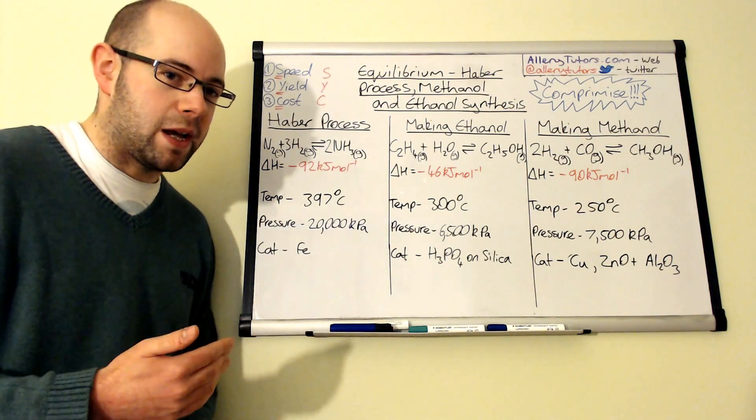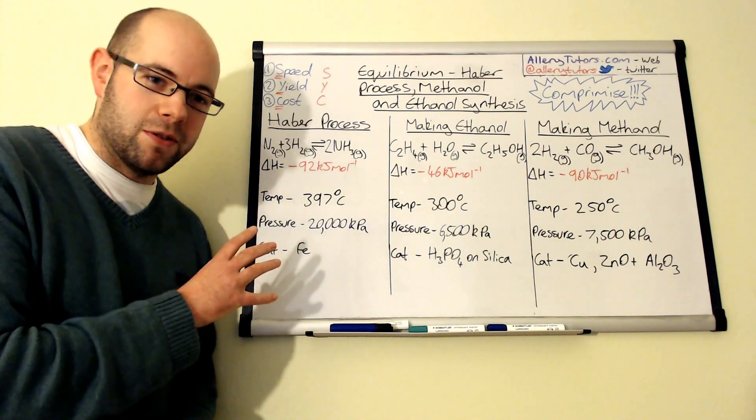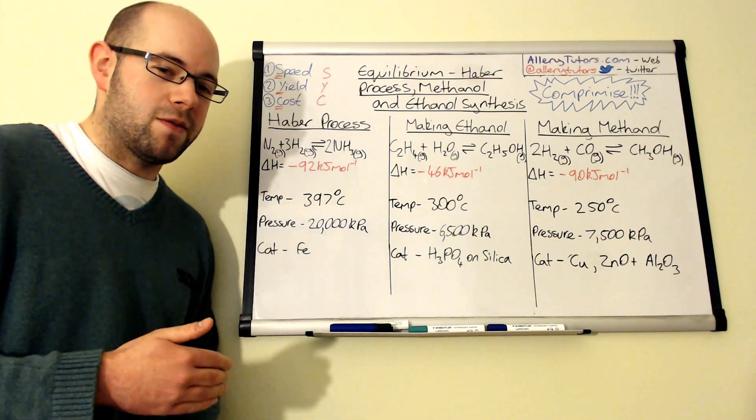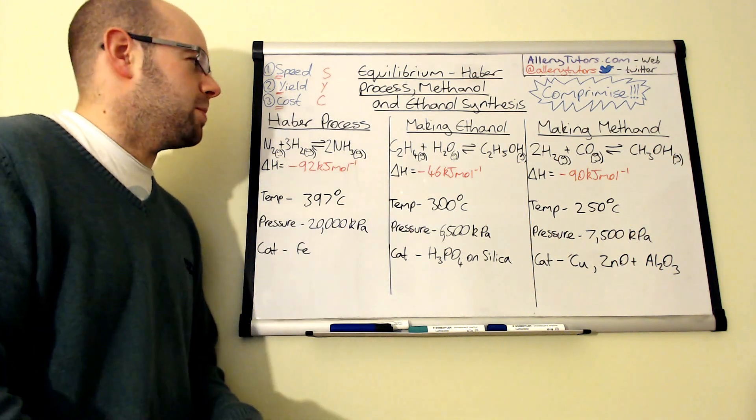Through each of these steps I'm going to guide you through and show you the compromises that are made and explain it in terms of equilibrium and Le Chatelier, because the chemical reactions don't always necessarily work in the company's favor to make money. So we're going to explain the compromises that have to be made.